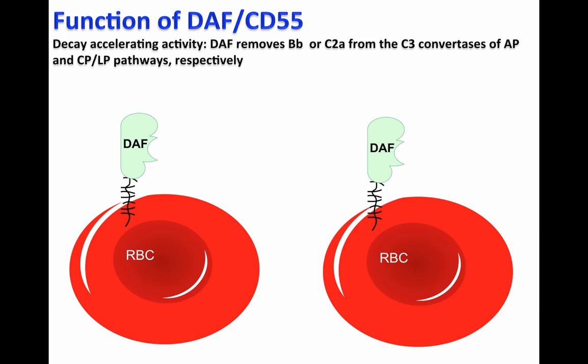In certain circumstances, the complement system can be activated on the cell surface of host cells — here represented by the deposition of C4b and C3b on the cell surface of red blood cells.